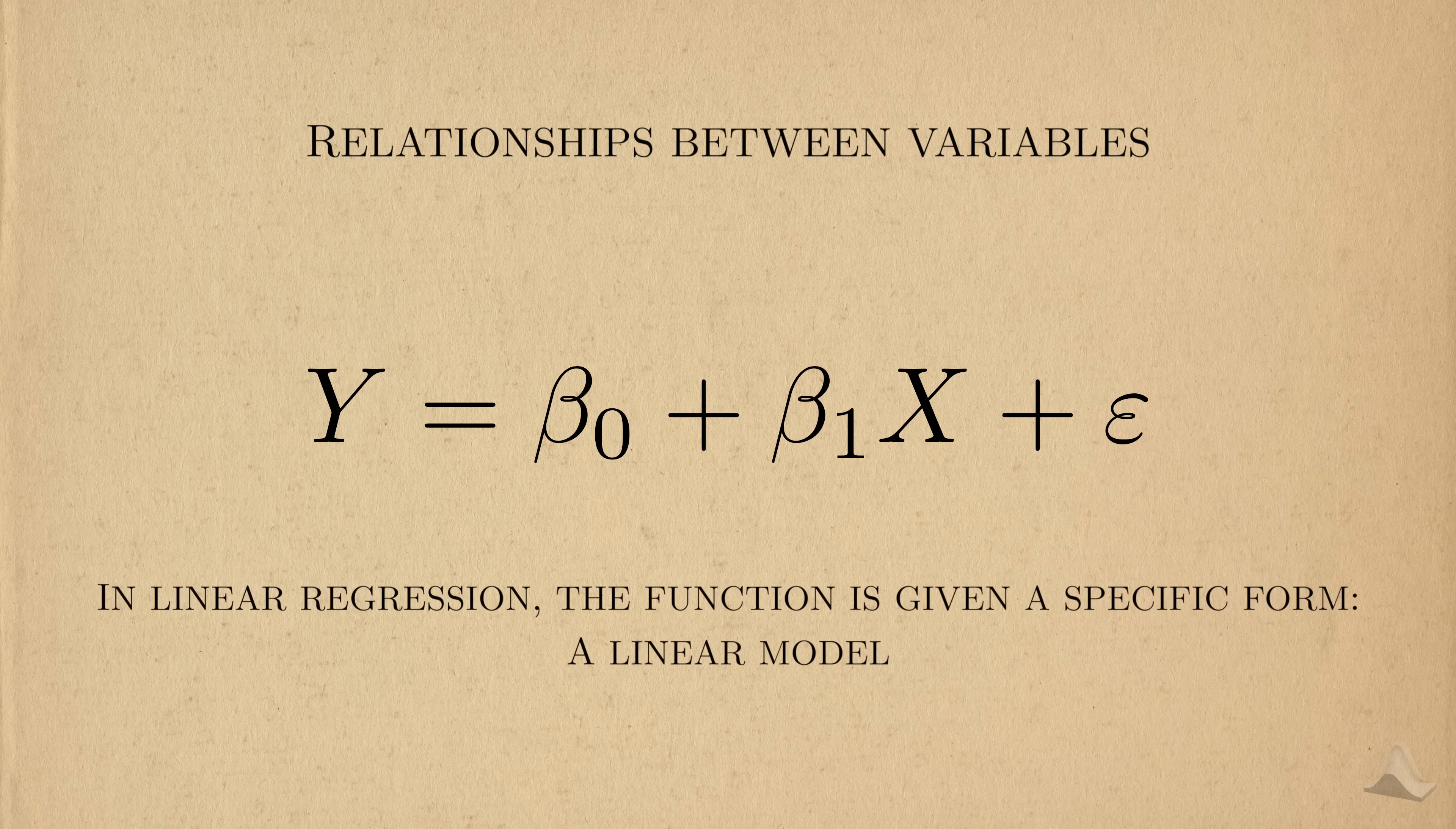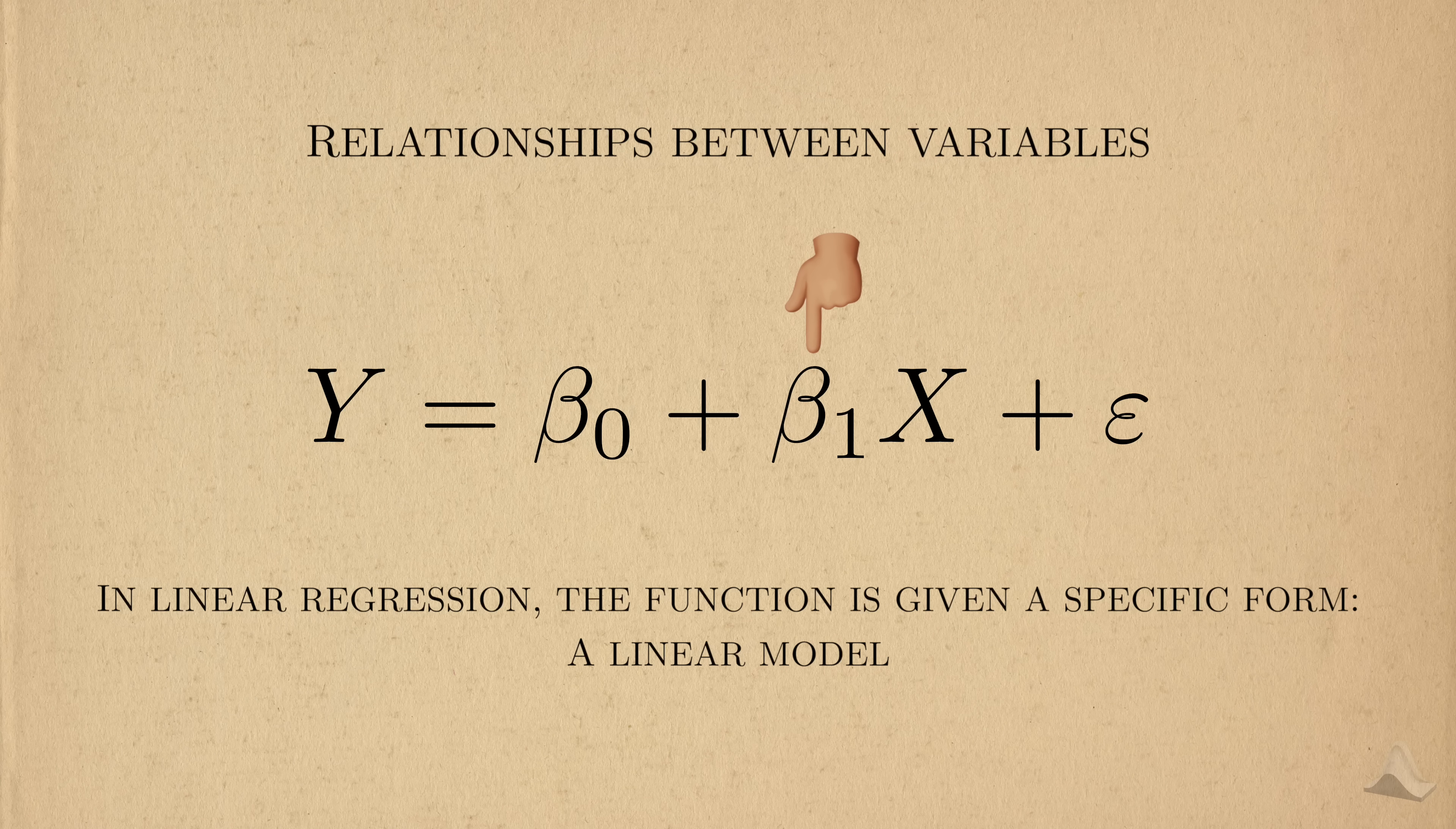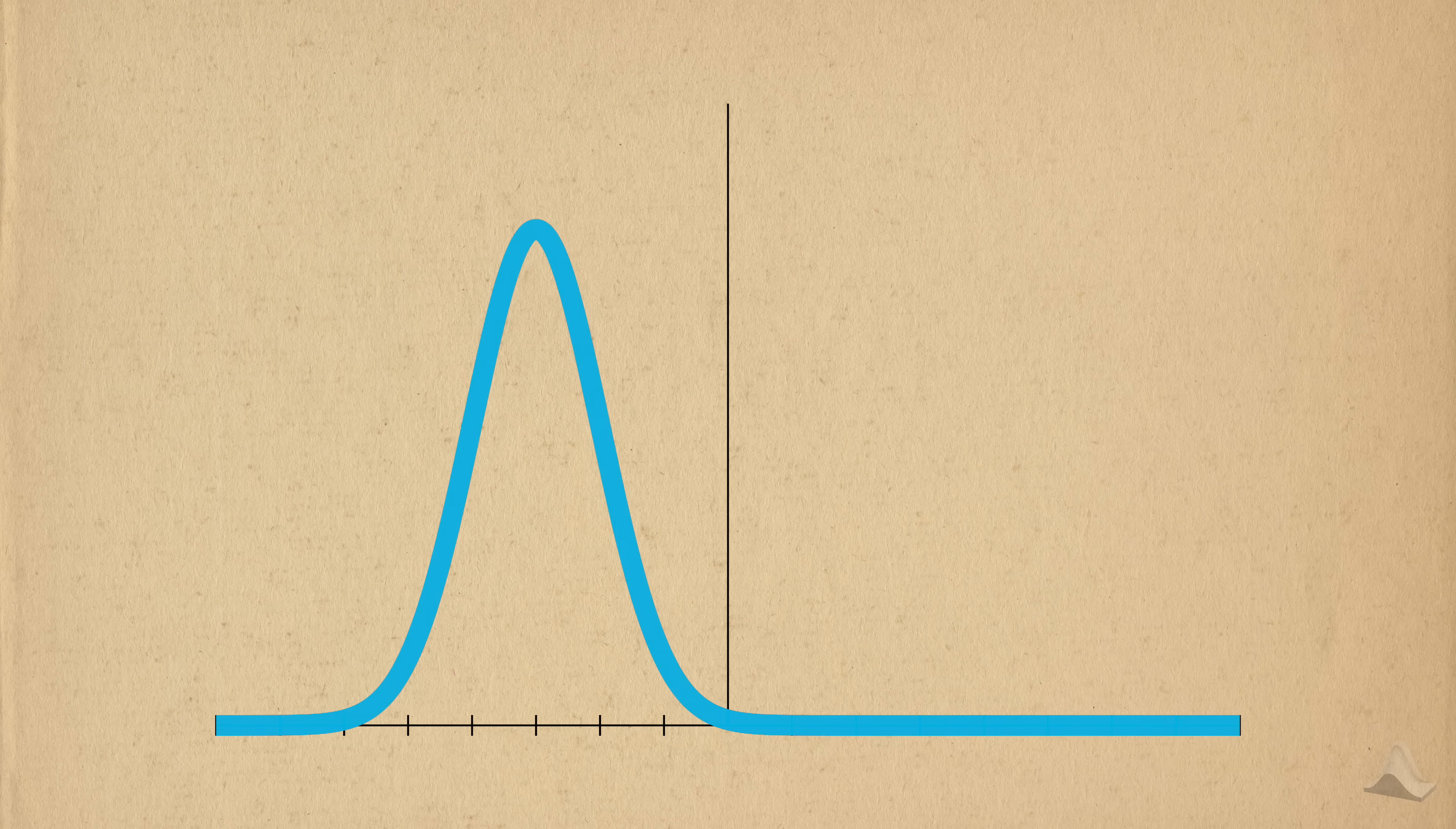With linear regression, we assume or approximate the relationship f with the linear model. If you shift X by 1, there will be an average shift in the outcome by beta 1, which visually looks like a shift in the outcome distribution.